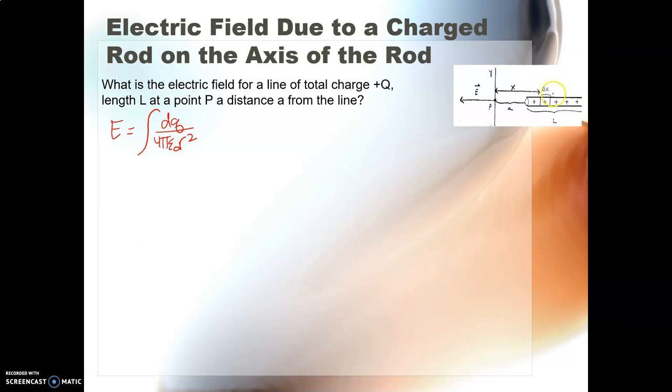Like I said, we're going to be adding up all of our little dqs, some distance x away from the point of interest. So just like we did in the last one, we're going to say that dq is equal to the linear charge density times dx. And our r is going to be replaced with, for each of these little spots here that I add up, they're going to be a distance x away. So my r is going to be x.